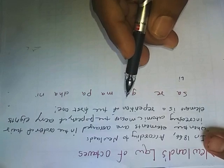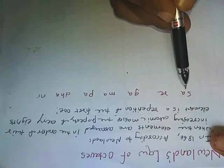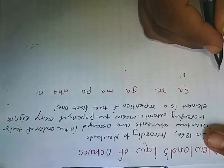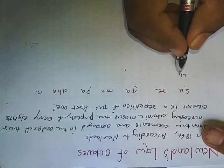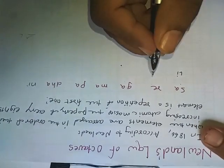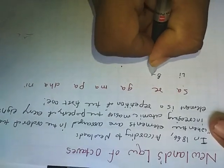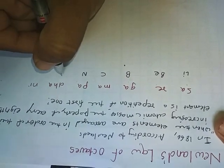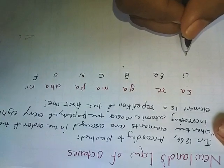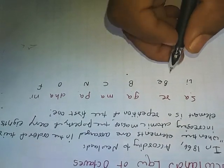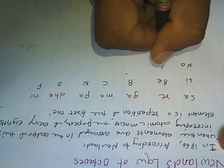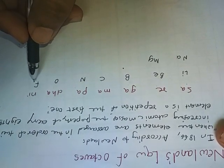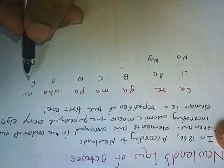He related his periodic law with notes of the musical scale. In the musical scale, every eighth note is the same as the first one. He arranged lithium - atomic number three - then beryllium, boron, carbon, nitrogen, oxygen, fluorine, then sodium, magnesium. If you're thinking after fluorine, neon will come, but at that time neon was not discovered yet.